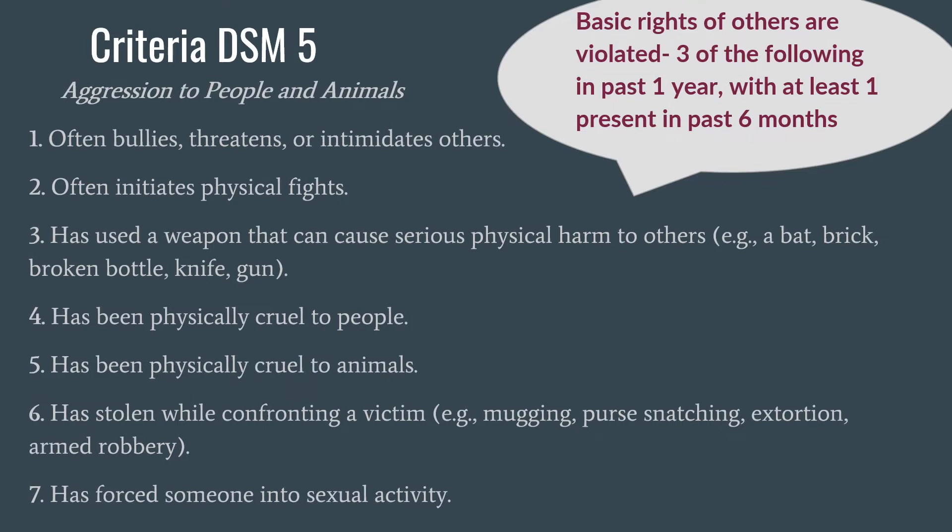We will now see the basic diagnostic criteria. There are five criteria. The basic rights of others are to be violated, and among the four categories, three symptoms should have been present for the past one year, and of those, at least one should have been present for the past six months. These are grouped under four categories.